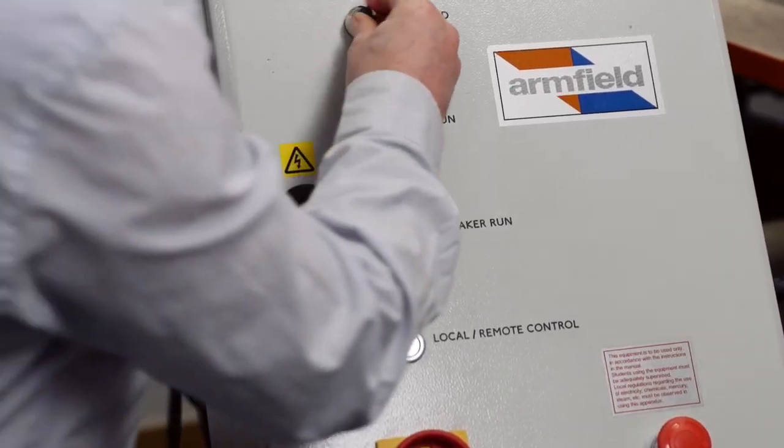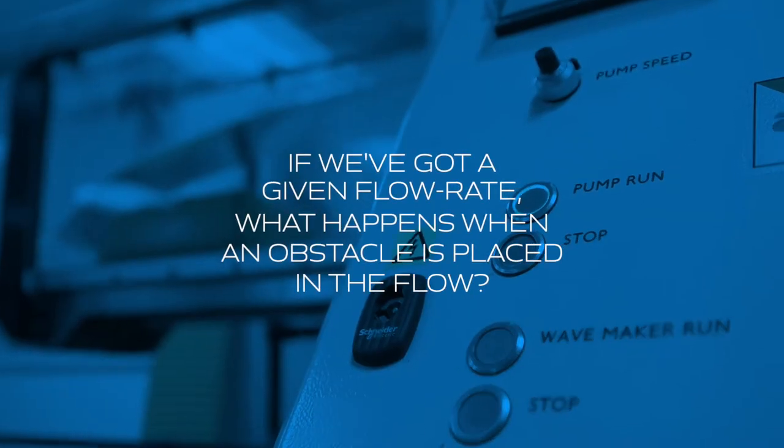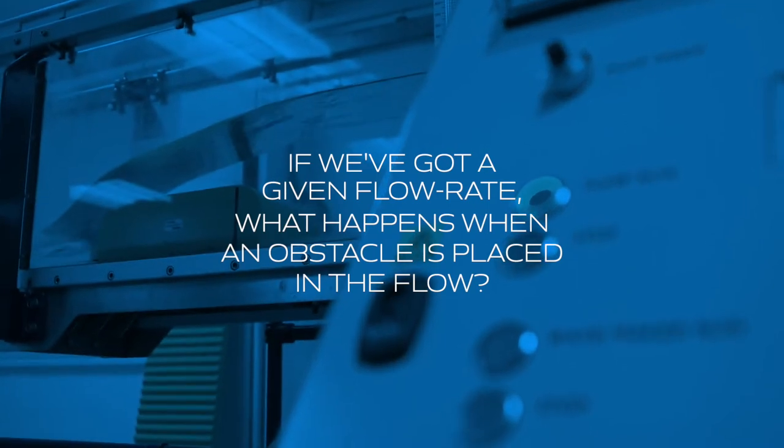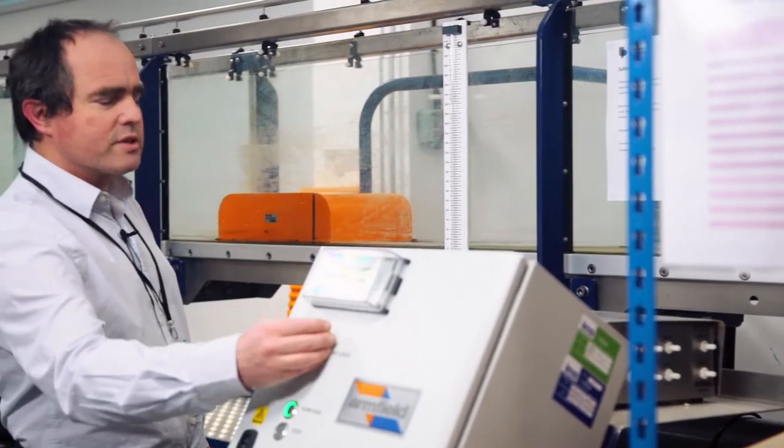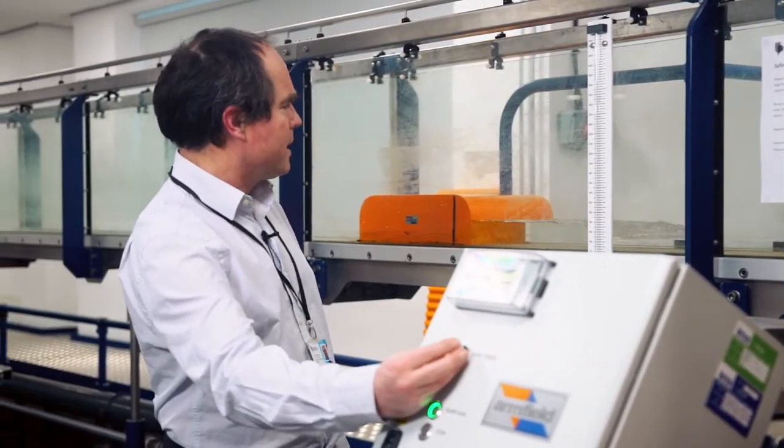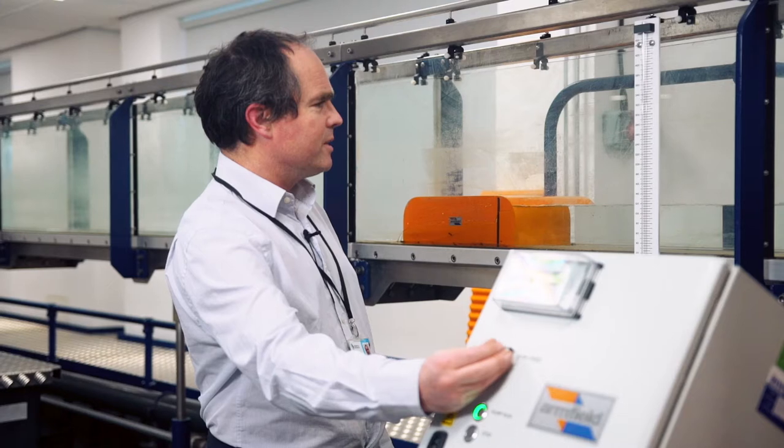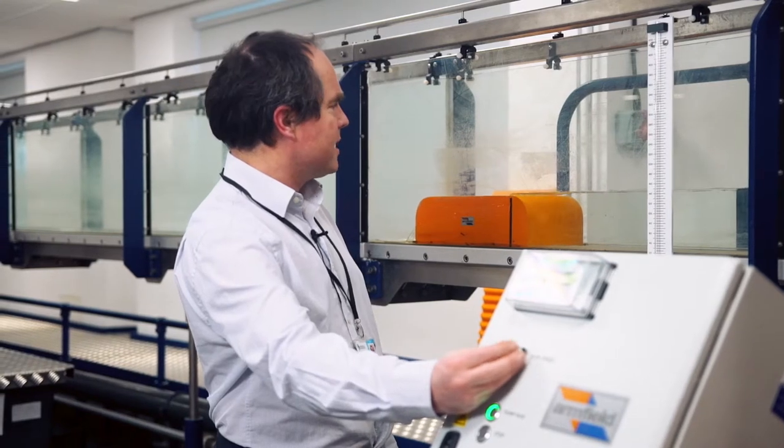If we've got a given flow rate, what happens when an obstacle is placed in the flow, and also what happens downstream of it. So we get a different sort of flow regime on one side compared to the other, and you'll see this as it fills up.